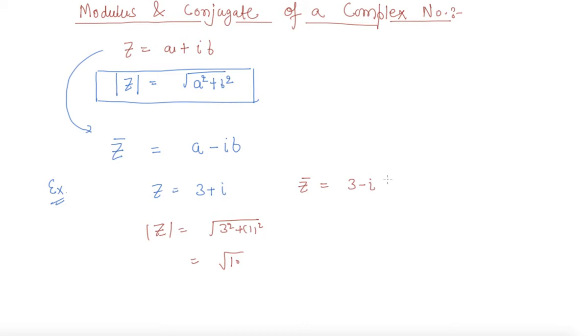Students, there is one property: when z gets multiplied by its conjugate, it gives mod z square. Let us verify by taking LHS.